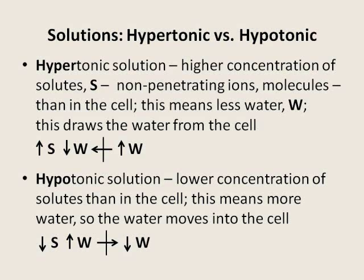Let's compare hypertonic and hypotonic solutions. Hypotonic solution has a higher concentration of solutes than the cell — we will mark those solutes as capital S. They are particles, molecules, or ions that cannot penetrate the membrane. If there is a higher concentration of solutes, indicated by the upward arrow, it also means that there is less water in the solution than in the cell, indicated by arrows at the W's for water. The water moves through the membrane by osmosis from high to low water level, leaving the cell. Hypotonic solution is the opposite — it has lower concentration of solutes than the cell. Lower concentration of solutes means higher concentration of water, so it moves into the cell from high water level to low.